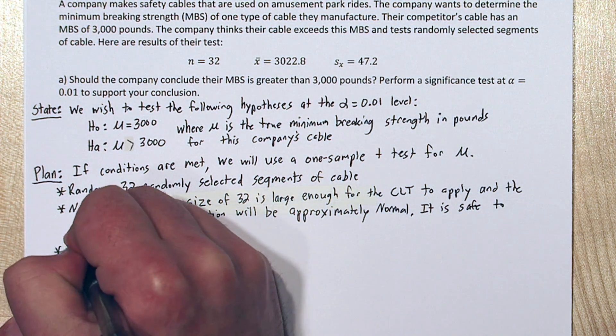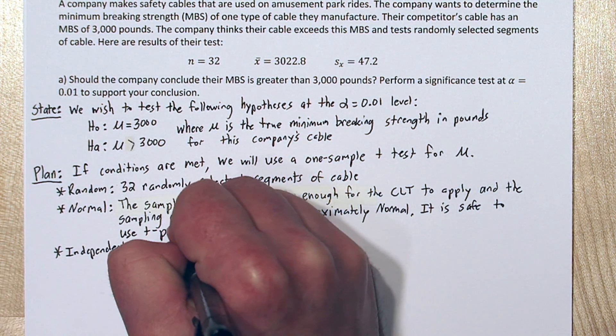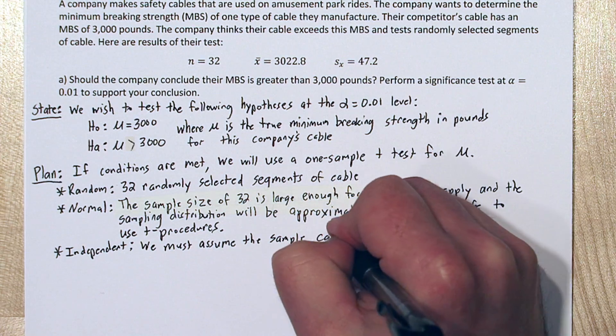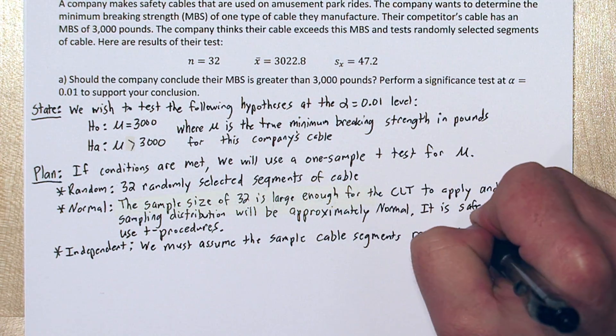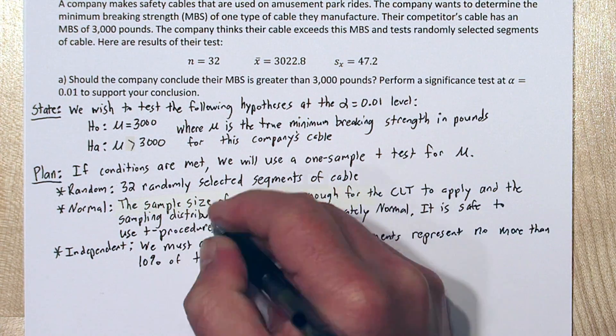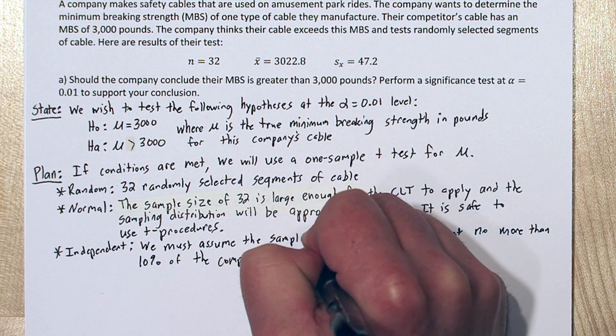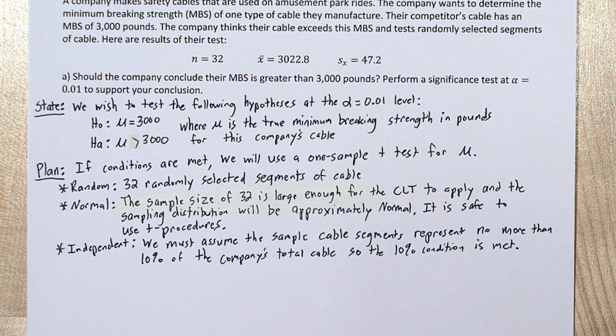Finally, for the independent step, as long as we assume the segments of cable for our sample represent no more than 10% of the total population of cable, so all the cable the company has, the 10% condition is met, and we can assume independence.